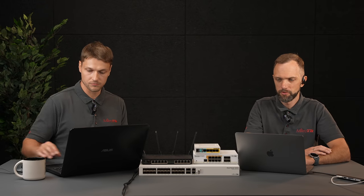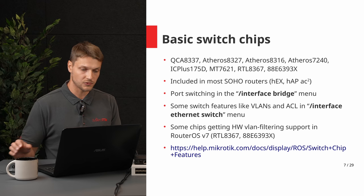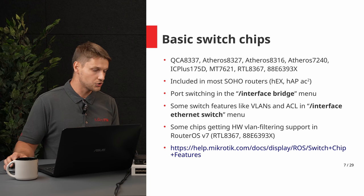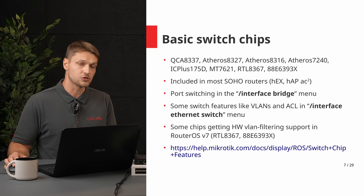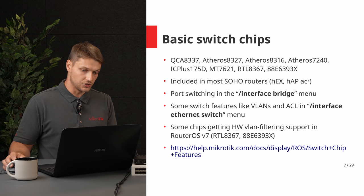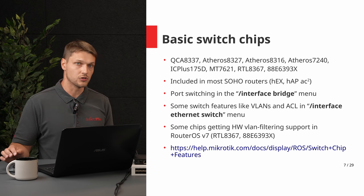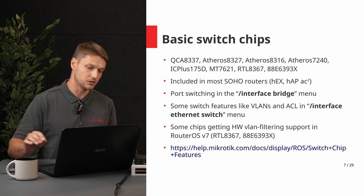Different devices have different features. In MikroTik we have many switches grouped into four categories. The first is basic switch chips, included in most small office/home office routers like the RB4011. You get basic port switching in the bridge menu, and some switches have VLAN support in the switch menu. Recently, hardware VLAN support was added for some switches — for example, the RB4011 and RB5009 — and this hardware offloading is available in RouterOS version 7.